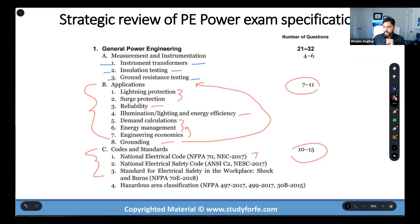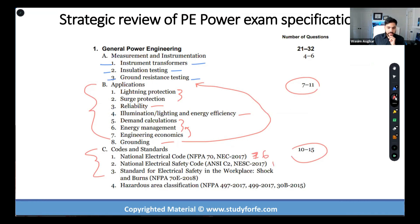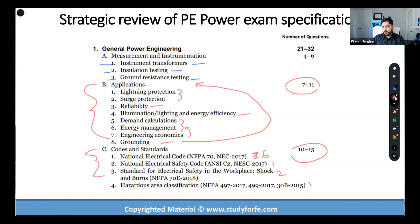I would spend six hours on NEC, one hour on NESC, maybe two hours on NFPA 70E, and one hour on hazardous area classification. So that's sort of a 60-20-10 split. The lion's share is NEC, followed by NFPA 70E, and then NESC and hazardous area classification are a bit on the easier side — or less important. In fact, NEC already covers Article 500.